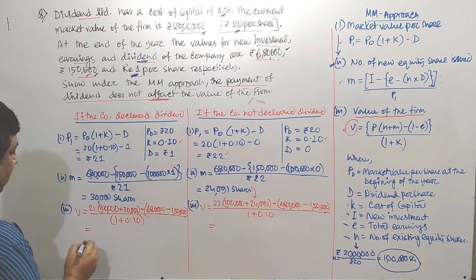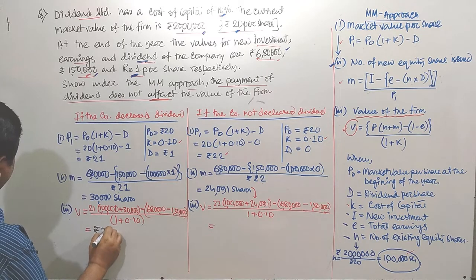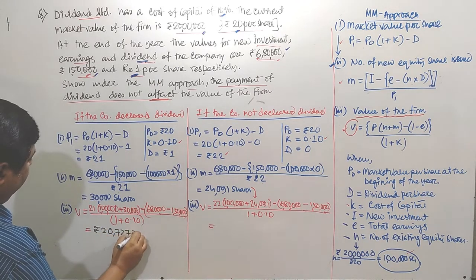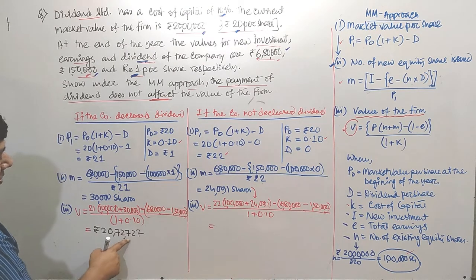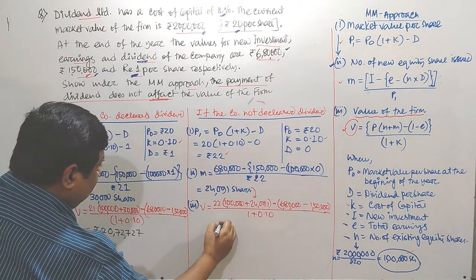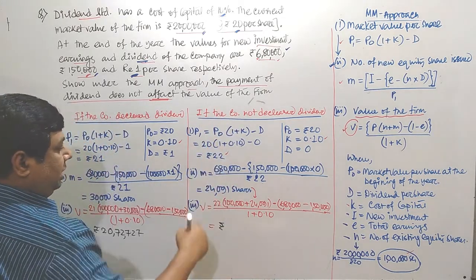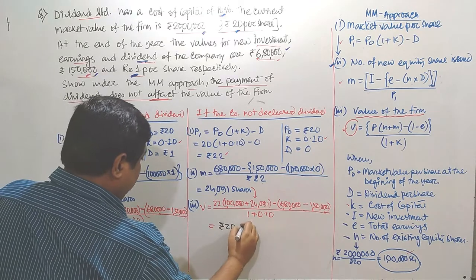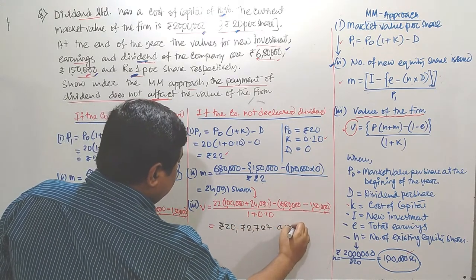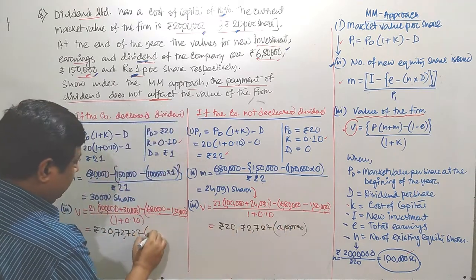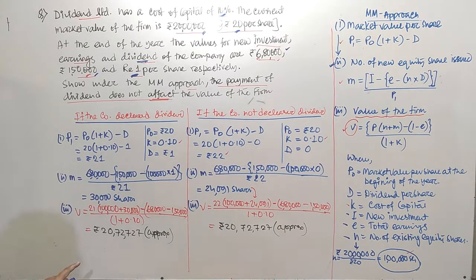Once we solve both equations, the value of the firm comes to approximately Rs. 20,72,727 in both cases — whether the company declared dividend or not, the value of the firm remains approximately the same.